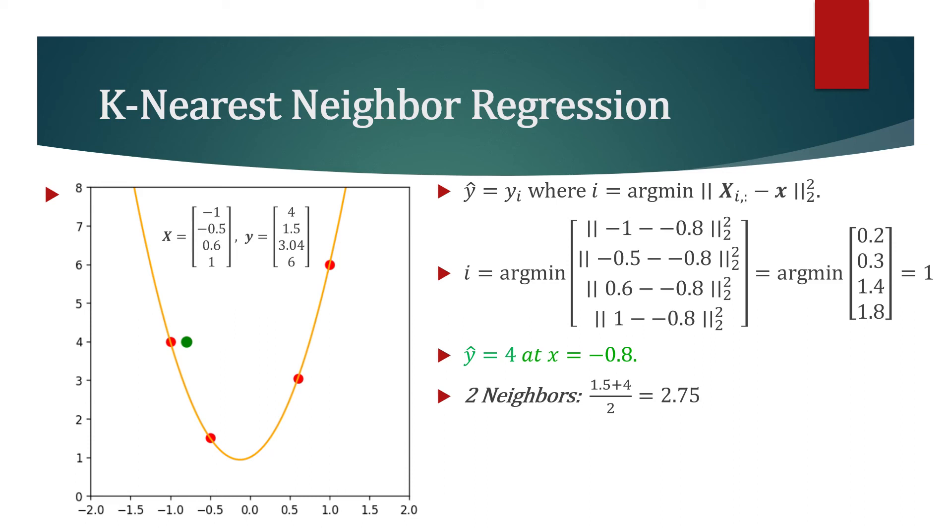Instead of choosing the closest entry, we can choose the average of the two closest entries. This would be called two nearest neighbor regression.